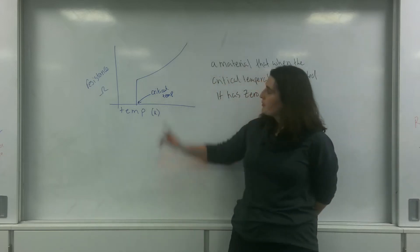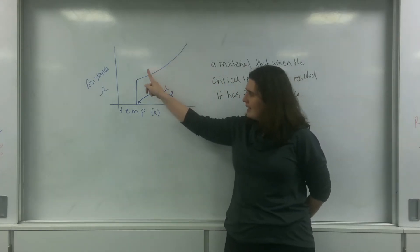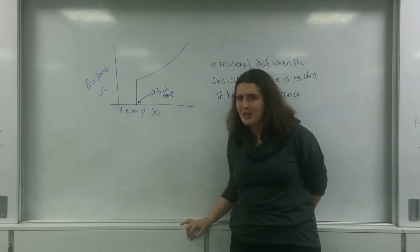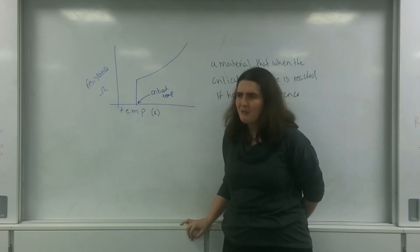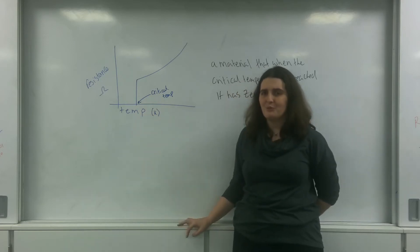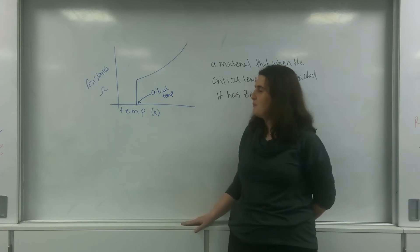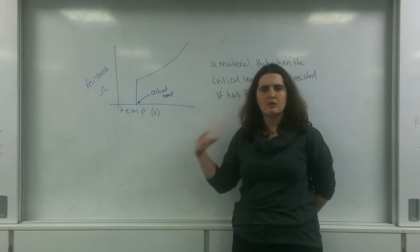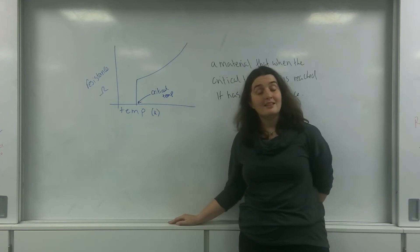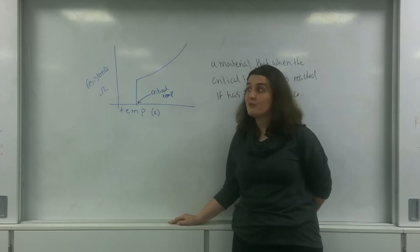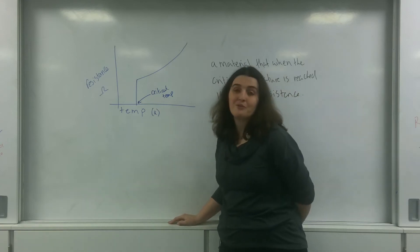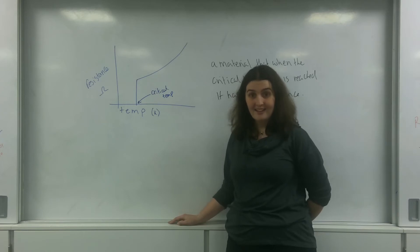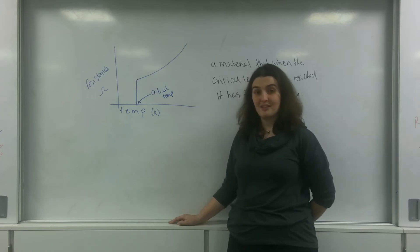So on this graph, when the material hits a certain very low temperature — around three Kelvin — the resistance goes to zero. This is really useful for the forefront of science. And that is superconductors.